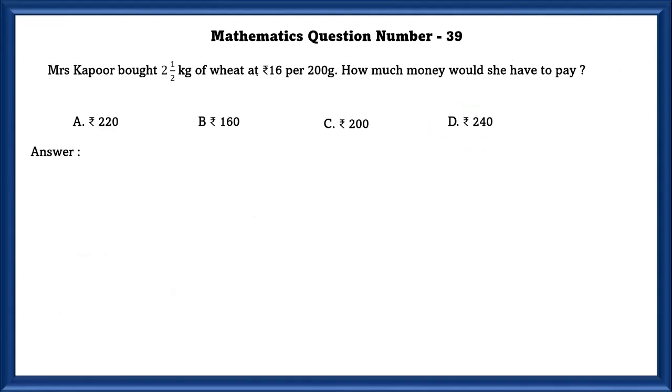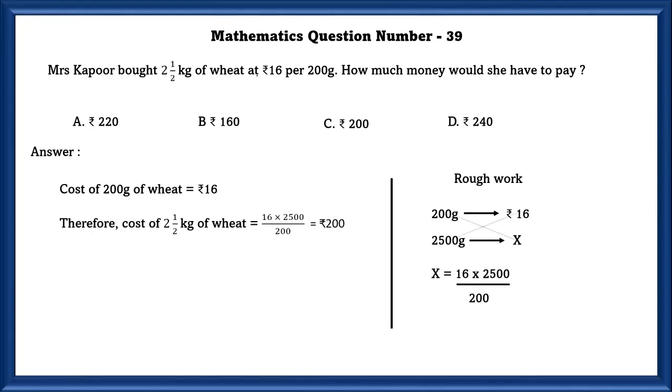Mathematics question number 39. Mrs. Kapoor bought two and a half kg of wheat at 16 rupees per 200 gram. How much money would she have to pay? Cost of 200 gram of wheat is equal to rupees 16. 200 gram is 16 rupees. 2500 gram is equal to x. By cross multiplying, we can find the value of two and a half kg of wheat, that is 200 rupees.